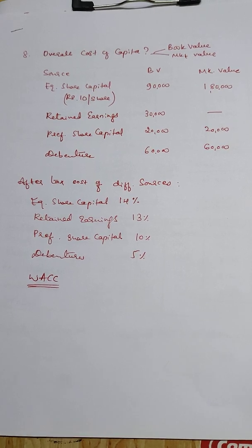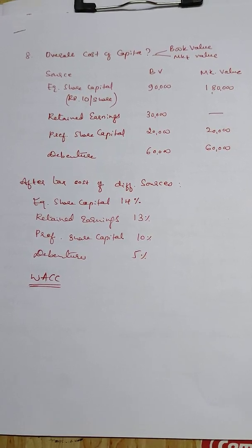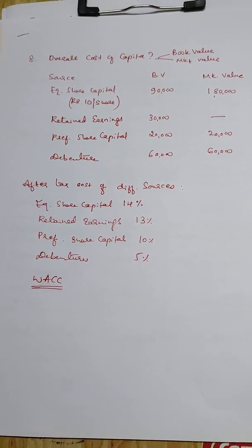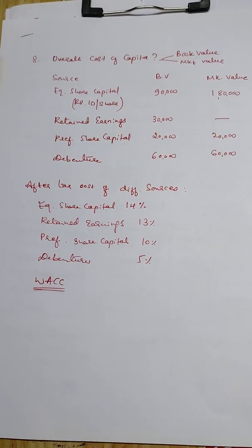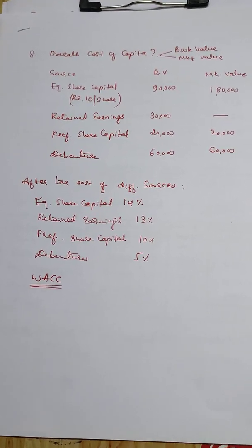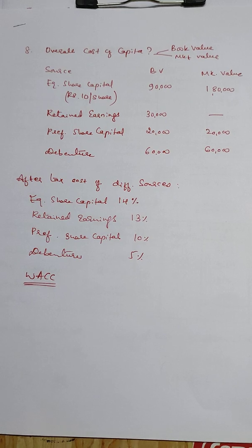The overall cost of capital involves book value and market value. The sources of capital include equity share capital at 10 per share, shown with both book value and market value columns.